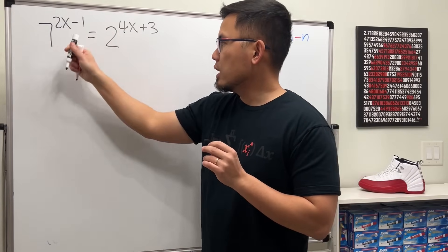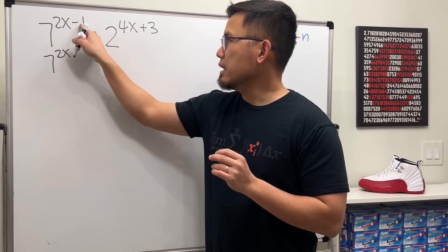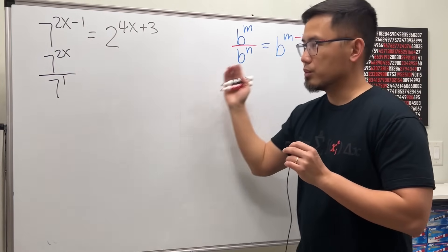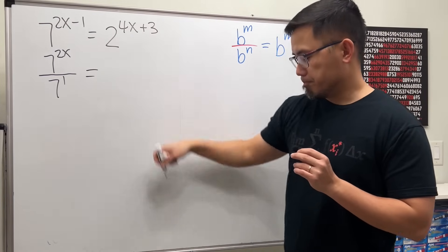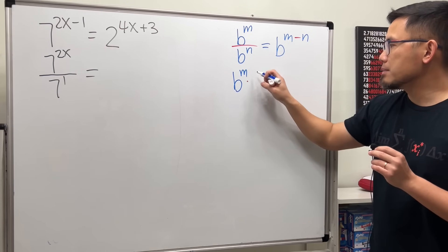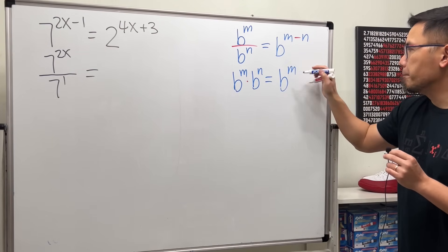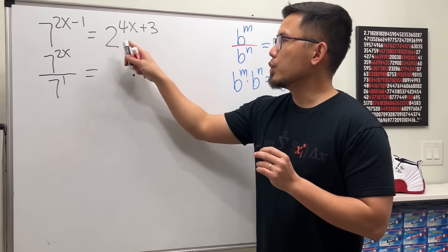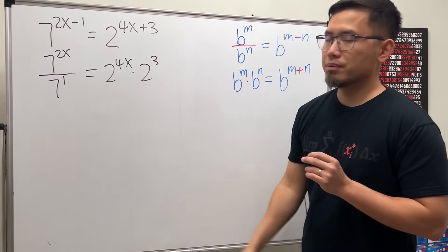So, this right here will be 7, and we keep the 2x on the top right here. The minus 1 tells us we divide by 7 to the first power. So, this rule of exponents. On the right-hand side, we have a sum. So, this is the case that if we have b to the power m times b to the power n, and we add the exponents, b to the m plus n. And again, we do this backwards. So, we will have 2 to the 4x power times 2 to the 3rd power.